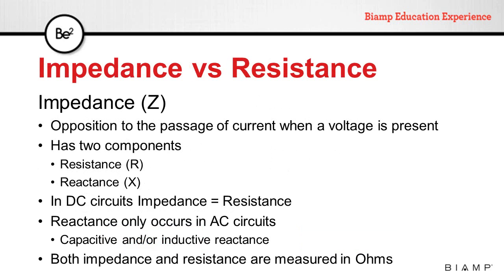In audio, we talk about impedance, not resistance. The difference is very simple. Impedance, as well as resistance, is the opposition to the passage of current when a voltage is present, but impedance has two components: resistance and reactance. In DC circuits, we only talk about resistance. Reactance only occurs in AC circuits, and it can be capacitive or inductive. Both impedance and resistance are measured in ohms.